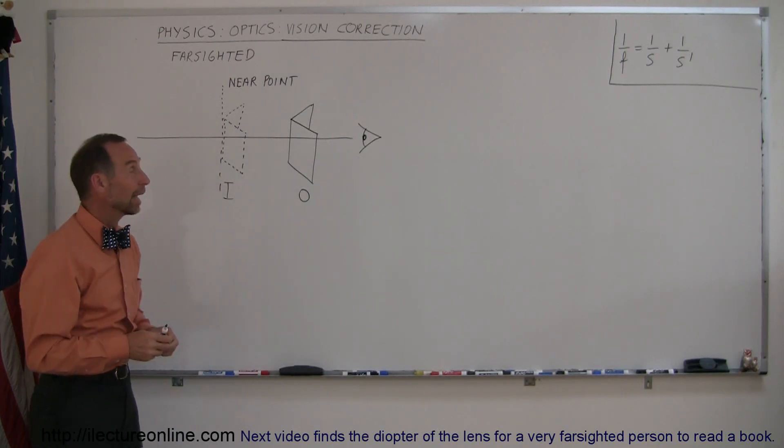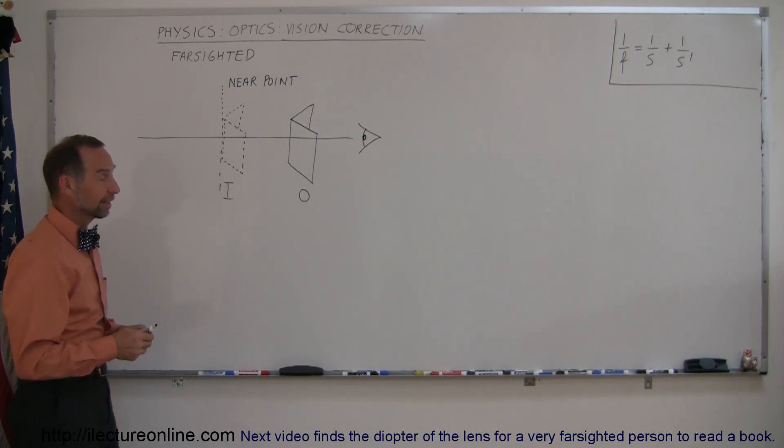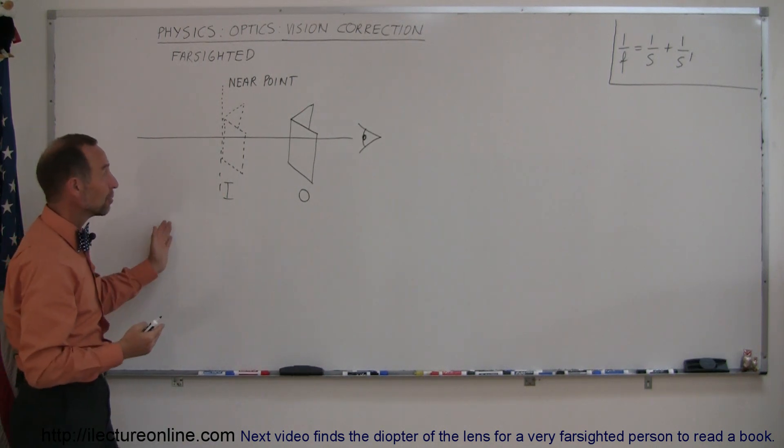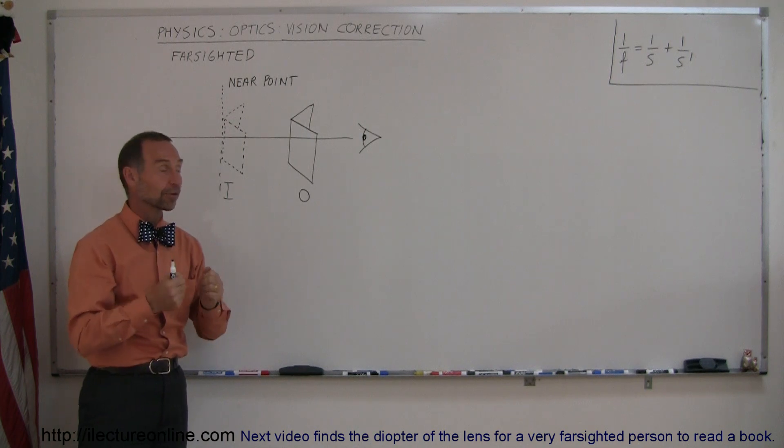Welcome to Electron Online. And what do you do when you are farsighted? Farsighted means you can see things clearly when they're far away, but you have trouble seeing them when you bring them up close when you want to read a book, for example.